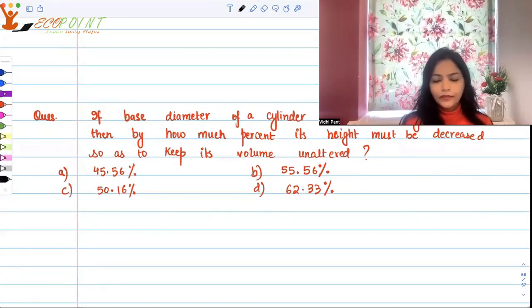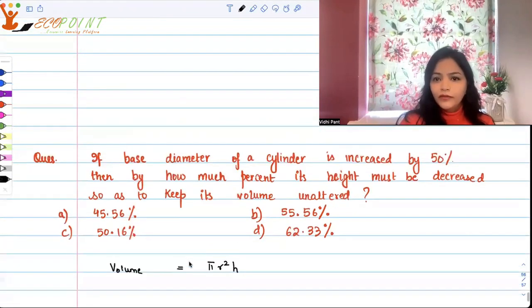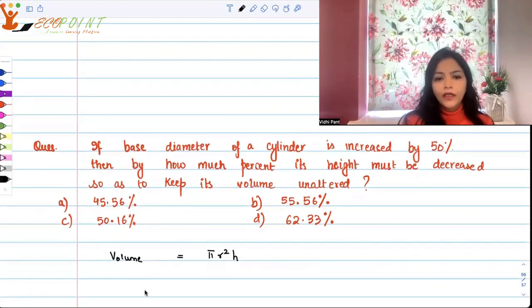The easiest way to solve this question is: first you need to know that volume of any cylinder is πr²h. We don't have exact numbers for radius and height, so we'll have to assume some values. Since diameter is getting increased by 50 percent, radius is also getting increased by 50 percent.